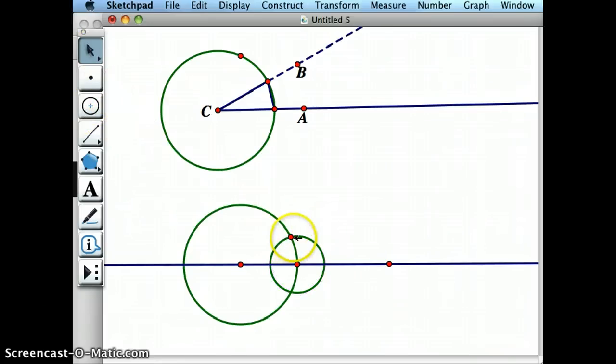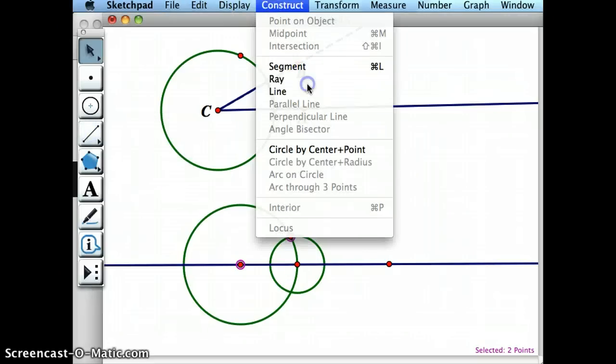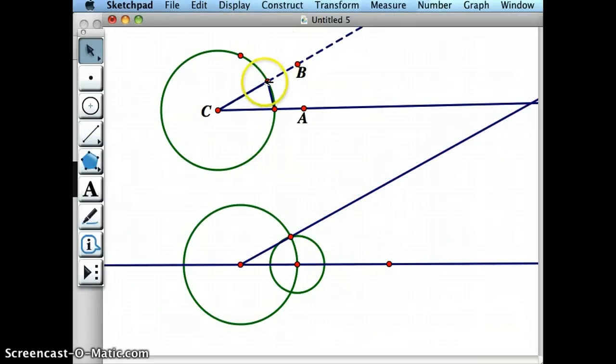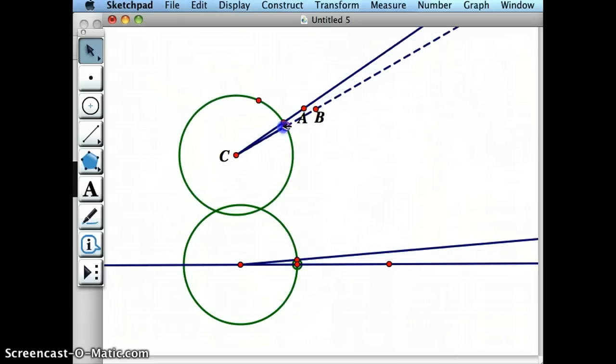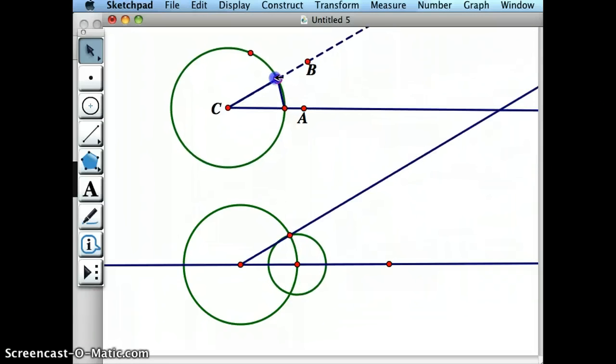So I now go ahead and click on these two points, construct array, and then I now have two angles that are exactly the same.